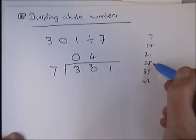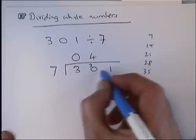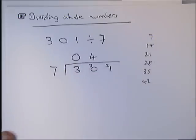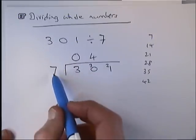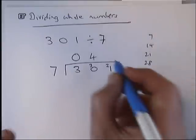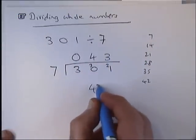Four sevens were 28, so you get up to 30—29, 30—that's a remainder of 2. That remainder of 2 comes here and that makes that number 21. Now I say how many times does 7 go into 21. I can look down my list: three times exactly. So there's my answer, 043. In other words, my answer to that question was 43.